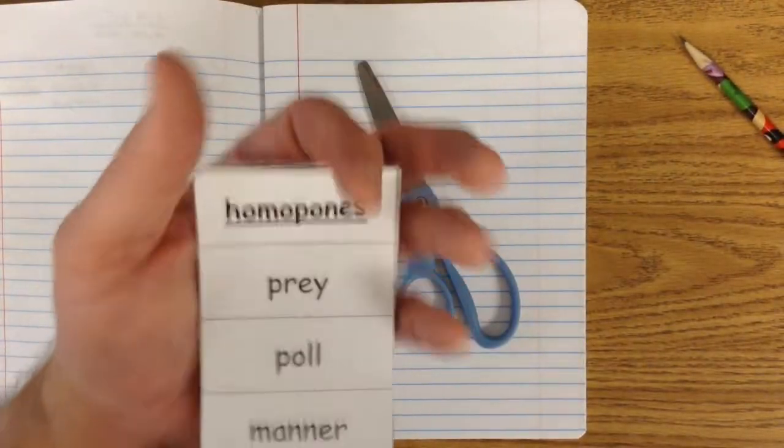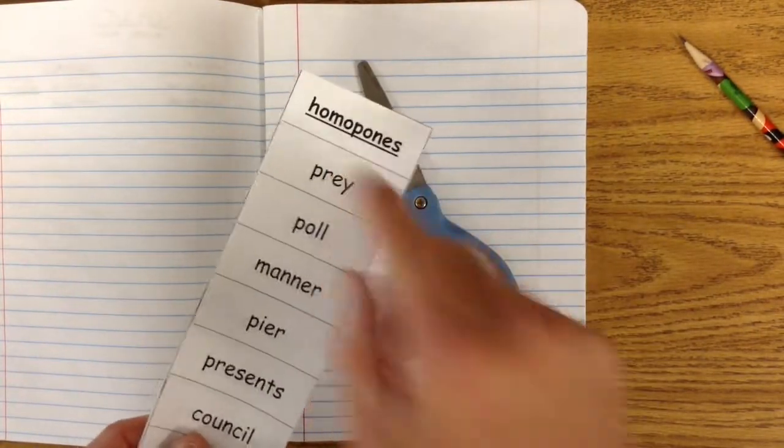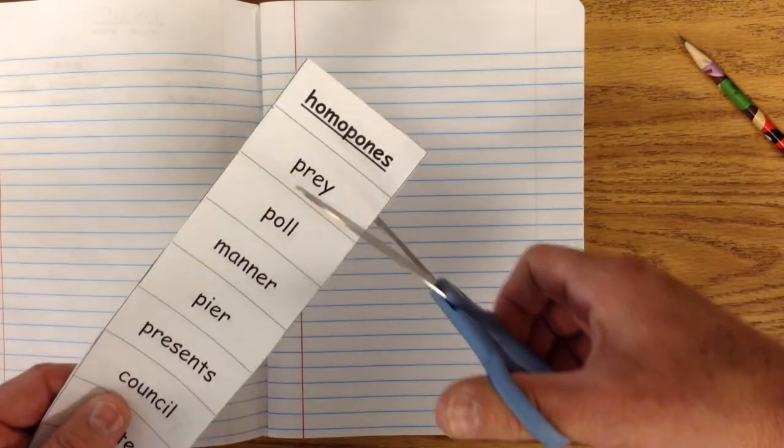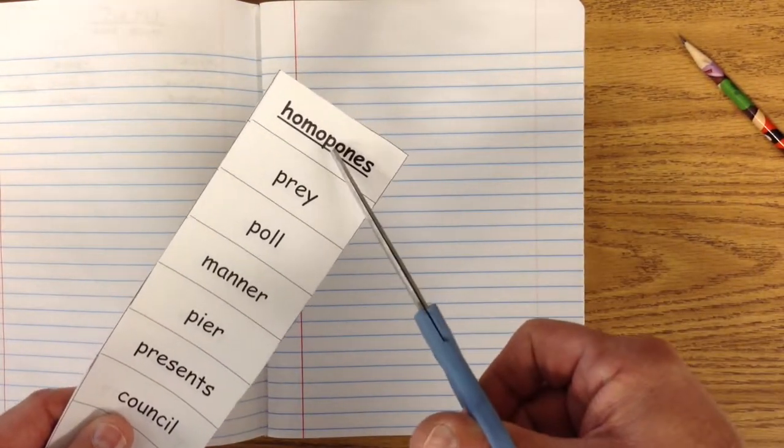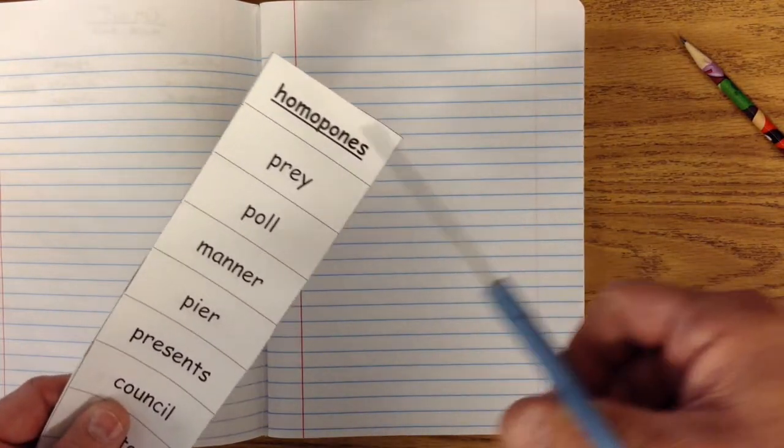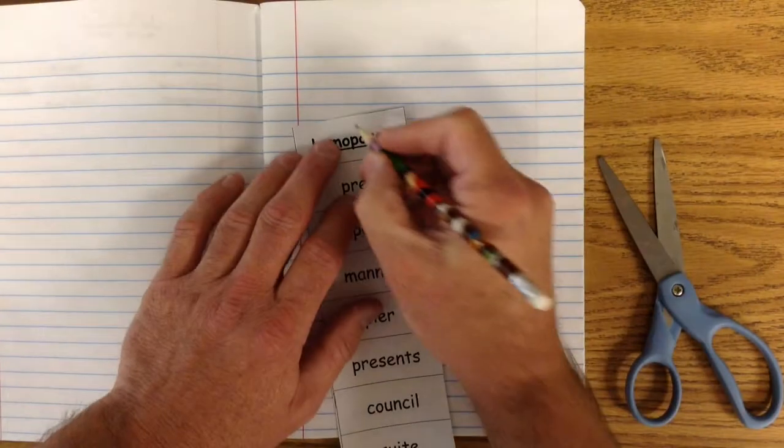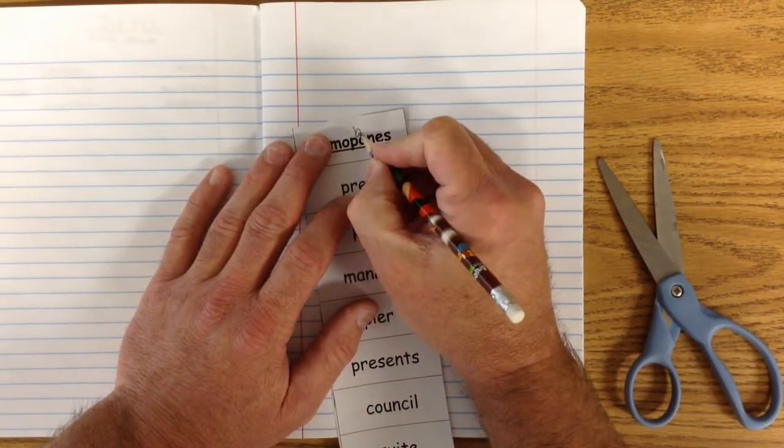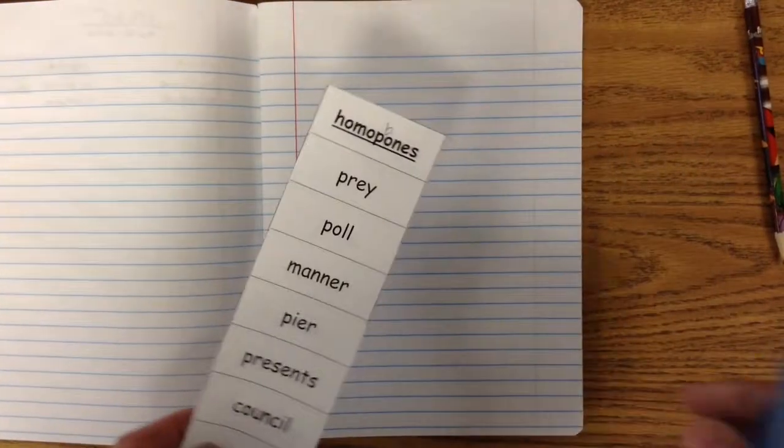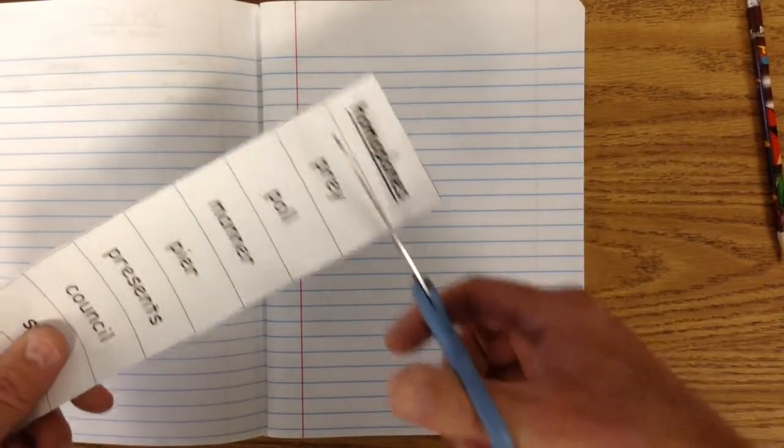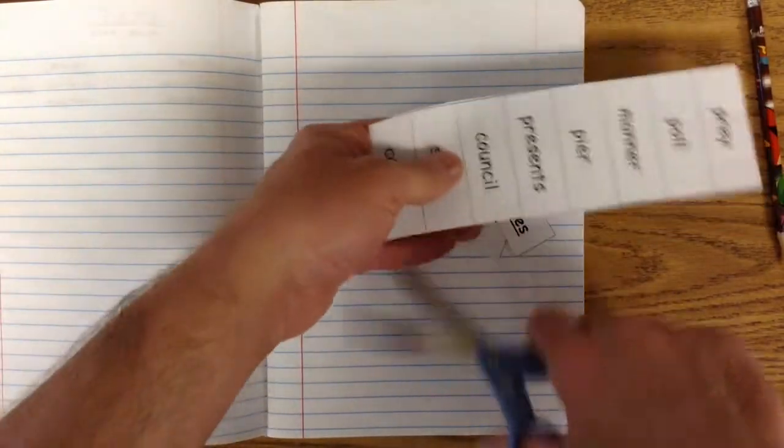I've got these here, and it looks like we're going to do some homophones. Homophones? I don't think they spelled that right. P-H-O-N-E-S. We better write that. So I need you to write that in, H-O-M-O-P-H-O-N-E-S. Homophone.